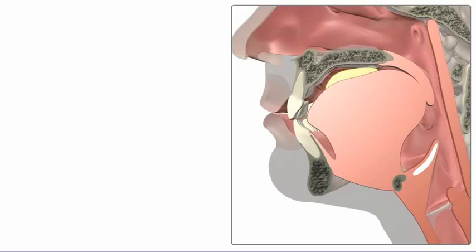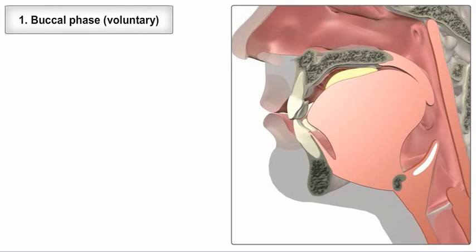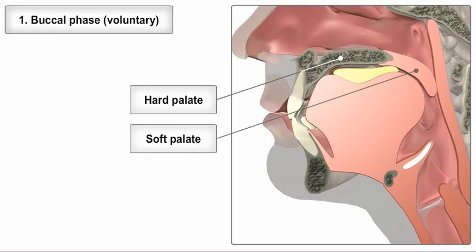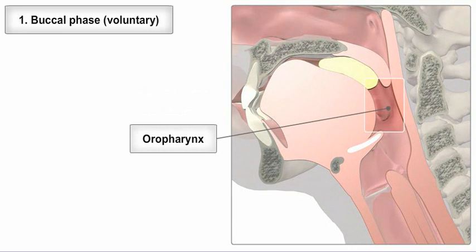Swallowing occurs in three stages. The first is a voluntary phase called the buccal or oral transit phase. Here the tongue moves upwards and backwards against the hard and soft palates to push the bolus into the oropharynx.